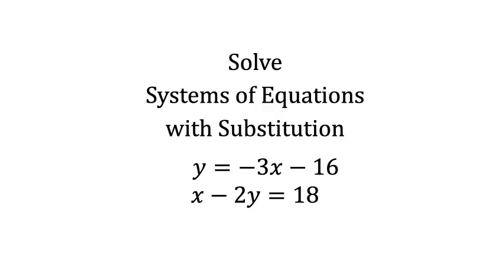Solving systems of equations with substitution is a method that involves solving one equation for one variable and then substituting that expression into the other equation. This allows you to reduce the system to a single equation with a single variable, making it easier to find the values of the variables one at a time. It is particularly useful when one equation can be easily rearranged to express one variable in terms of the other.